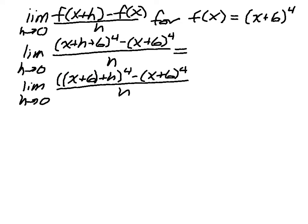So limit as h approaches 0 of, so it's 1, 4, 6, 4, 1. So (x+6)^4 plus 4(x+6)^3 times h plus 6(x+6)^2 h^2...